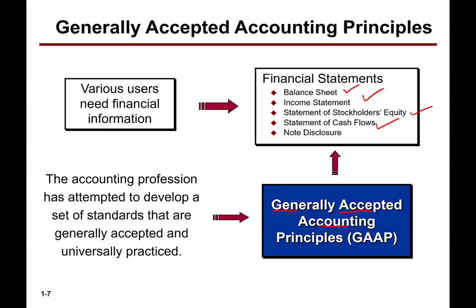When we prepare these financial statements, we follow generally accepted accounting principles — GAAP. Everybody follows the same rules when they prepare their financial statements. Why? So that we can compare company A to company B. We know they all follow the same standards, not just doing whatever they want. They follow some rules, and we can use that to make investment and credit decisions. Our primary users of financial statements — and in this class we're focusing on external users — are investors and creditors. Now, who writes these standards?